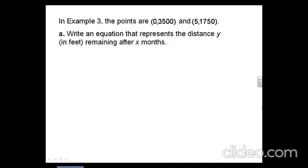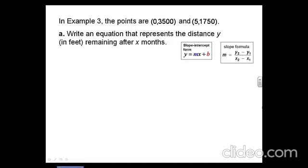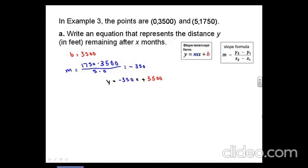In example 3, replace the points with (0, 3500) and (5, 1750). Part A: write an equation that represents the distance y in feet remaining after x months. To do this, we're going to use slope-intercept form and the formula for slope. To find our y-intercept b, which is when x equals 0, we look at our first point (0, 3500), so b equals 3500. To find our slope, we plug our two points into the slope formula: 1750 minus 3500, divided by 5 minus 0, which simplifies to negative 350. Plugging slope and y-intercept into slope-intercept form, our line is y equals negative 350x plus 3500.